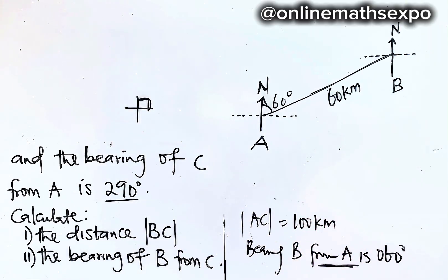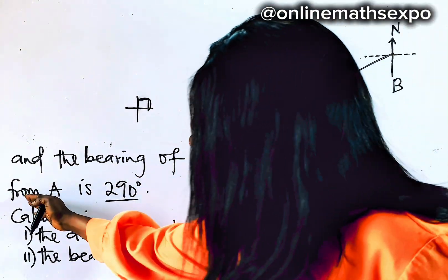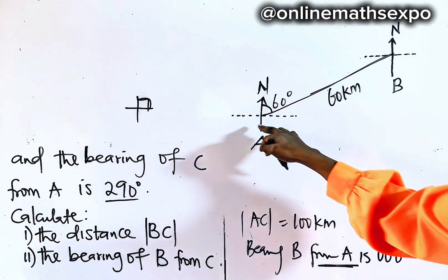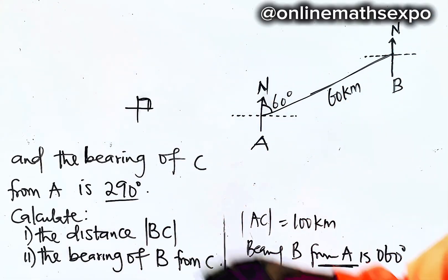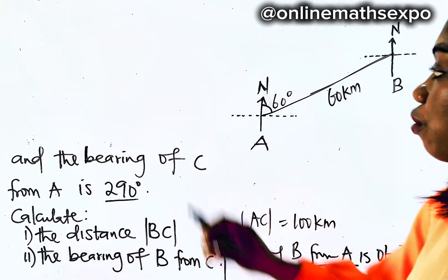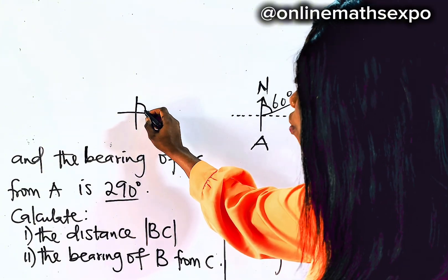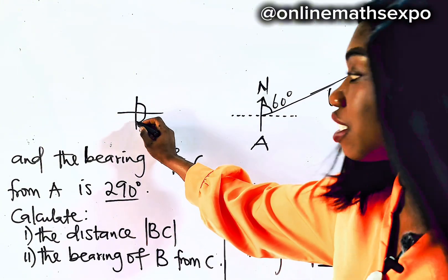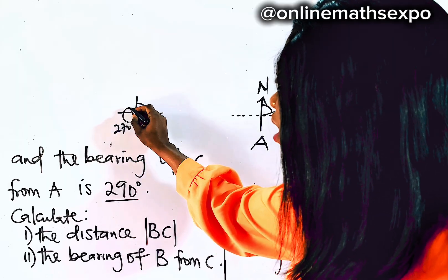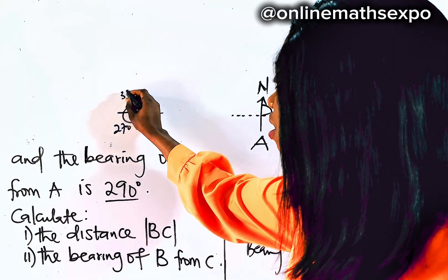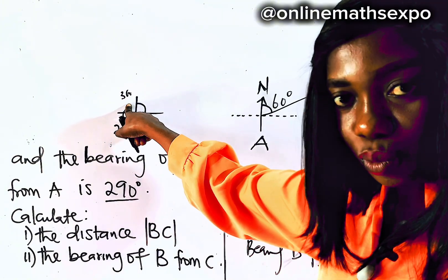Now let's go to the second. The question says the bearing of C from A — from the same A, from this place A — is 290. In your cardinal point: first quadrant is 90, second is 180, third is 270, and if it enters the fourth it is 360. So if it's 290, that means it is now in the fourth quadrant.